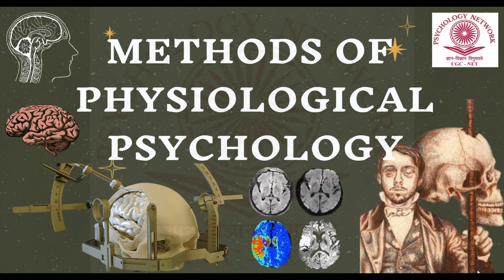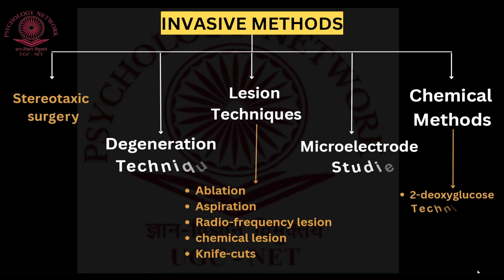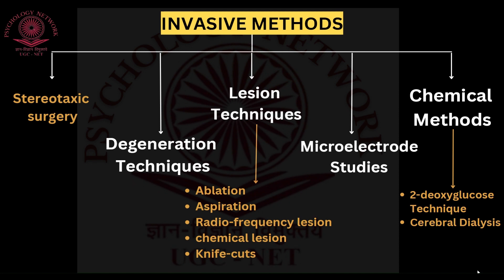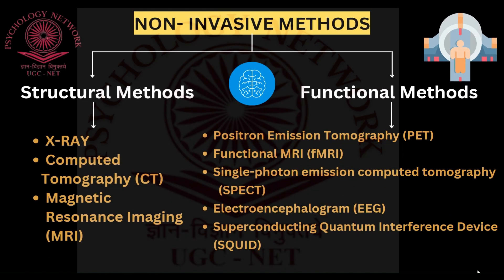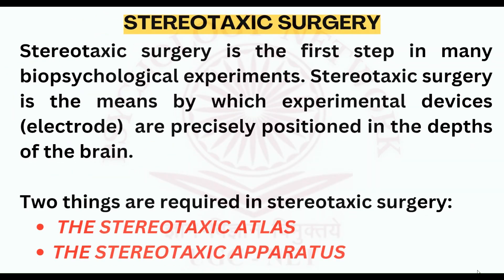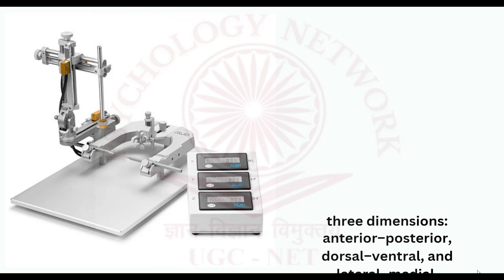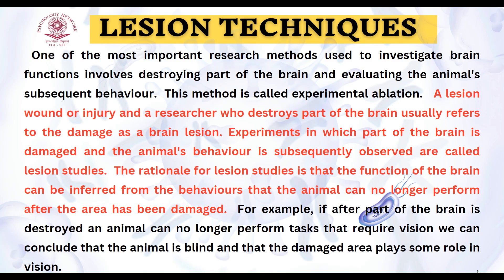Hello everyone, welcome back to Psychology Network. This is Part 2 of Methods of Physiological Psychology. In Part 1, I covered a few of the invasive methods: stereotactic surgery, degeneration techniques, and microelectrode studies and chemical methods. Part 2 will also cover invasive methods — specifically the lesion techniques. The non-invasive methods will be covered in Part 3. The link for Part 1 is in the description box below.